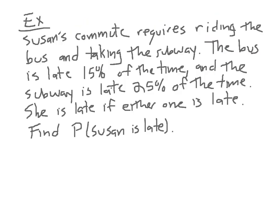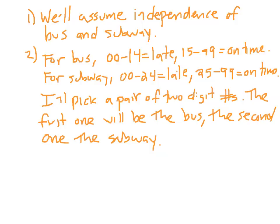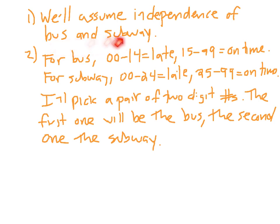Let's do another example — the last example of Section 6.1. Susan's commute requires riding the bus and taking the subway. The bus is late 15% of the time and the subway is late 25% of the time. She's late if either the bus or the subway is late. We want to find the probability that Susan is late. We'll assume independence of the bus and the subway — that whether the bus is late has nothing to do with whether the subway is late.